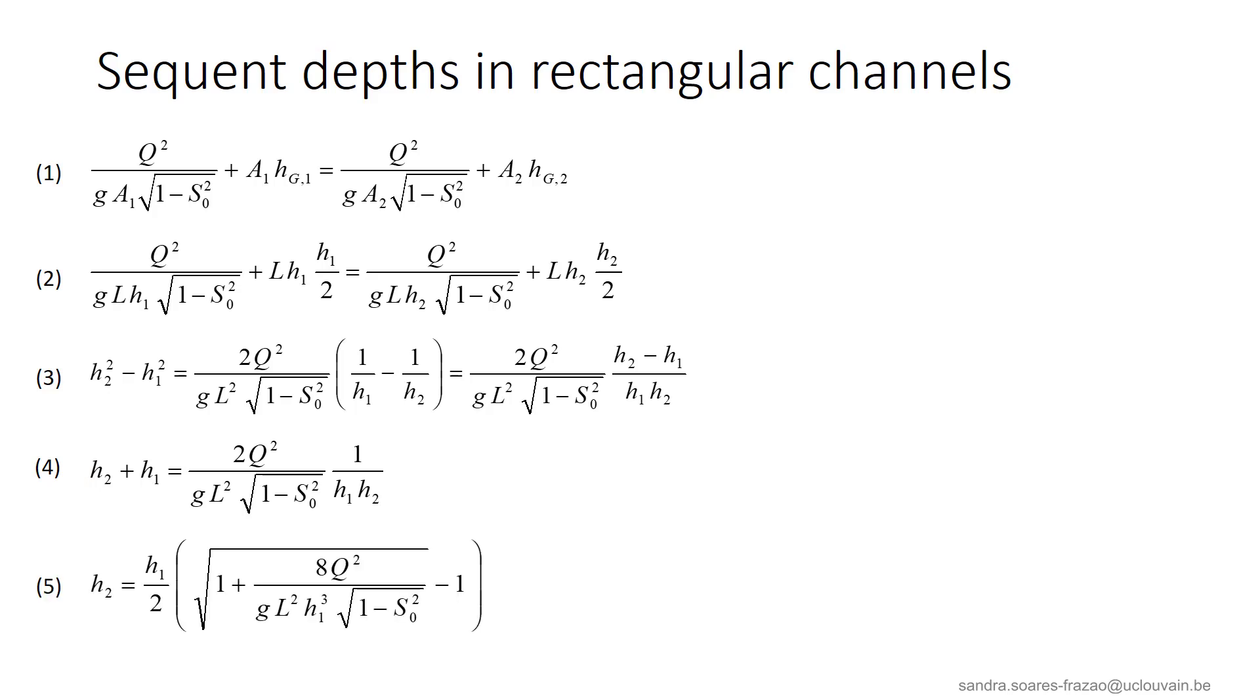Multiplied by h2, equation 4 is simply a second order equation in h2, for which the positive root is expressed in equation 5 here. Remembering the definition of the Froude number, and using it in equation 5,